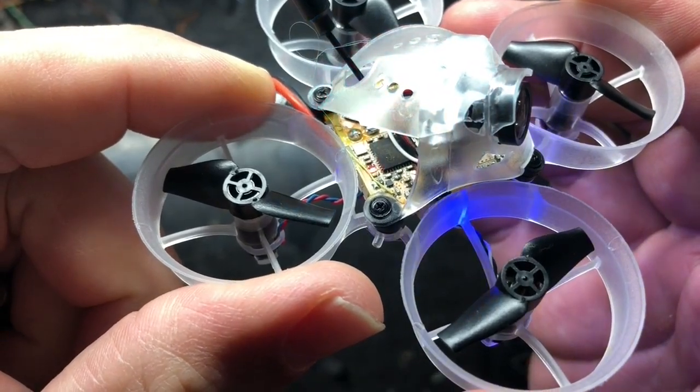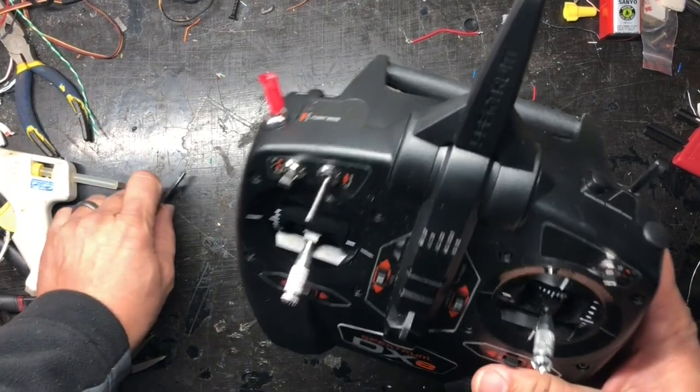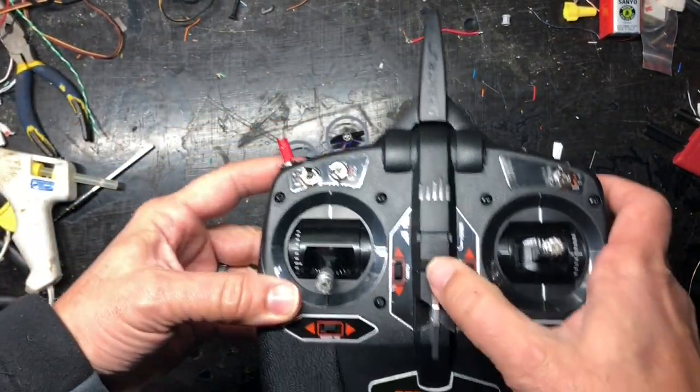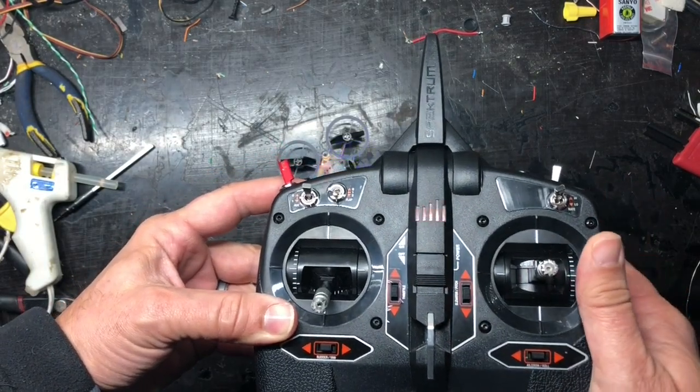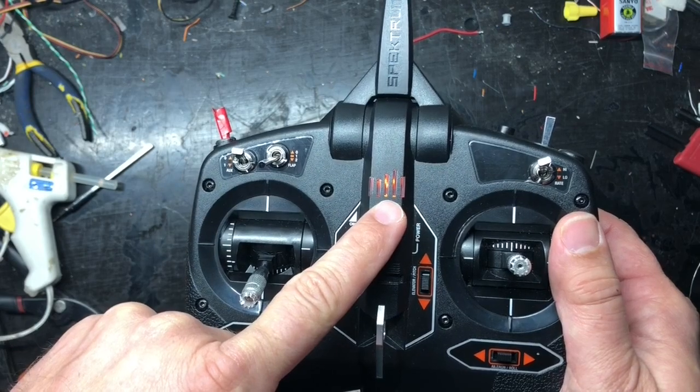That light there on the side starts flashing really fast, this little red light. Now I'm in bind mode, so all I have to do now is hold the bind button on the top of my radio down while I turn the radio on. See, it flashes, it goes in bind mode, it beeps and lets you know that it was done correctly.